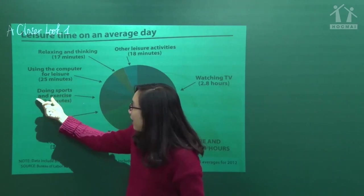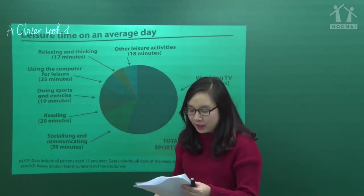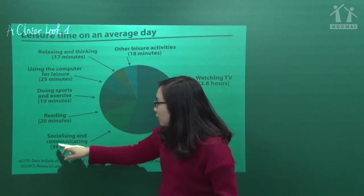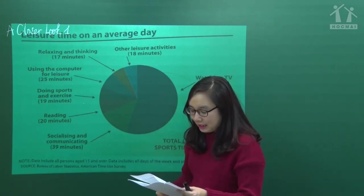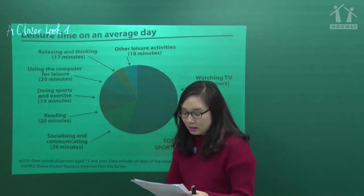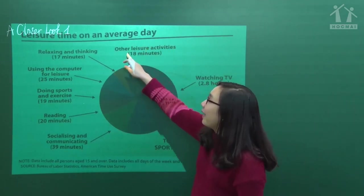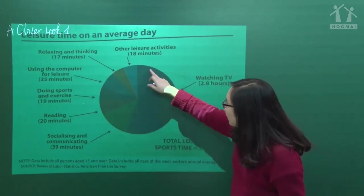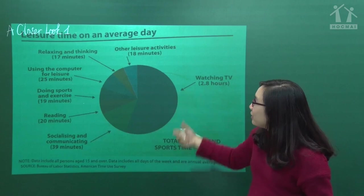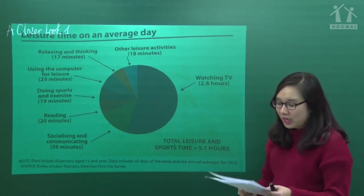The next, we have doing sports and exercise - tập thể thao hoặc tập thể dục - 19 minutes a day. Then reading - đọc sách - 20 minutes, or socializing and communicating - hòa nhập xã hội và giao tiếp - 39 minutes. Other leisure activities: 18 minutes. And the largest: watching TV - 2.8 hours per day - chiếm 2.8 giờ đồng hồ một ngày.